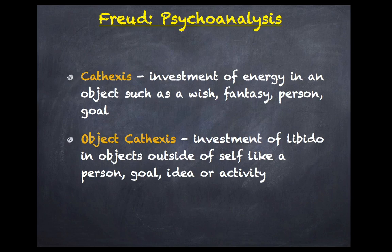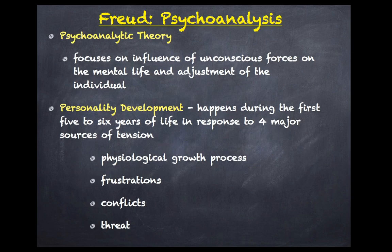Object cathexis is an investment of the libido in objects outside of the self, like a person, a goal, an idea, or an activity. Our first object cathexis, back when we were infants, was basically our parents or nurturers. The psychoanalytic theory focuses on the influence of unconscious forces on mental life. According to Freud, personality development happens during the first five to six years of life in response to four major sources of tension: physiological growth causes, frustrations, conflicts, and threats.